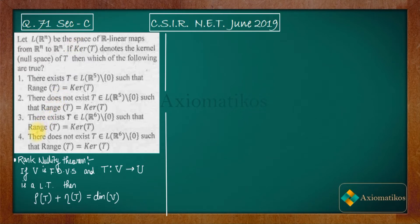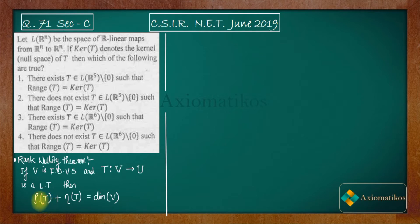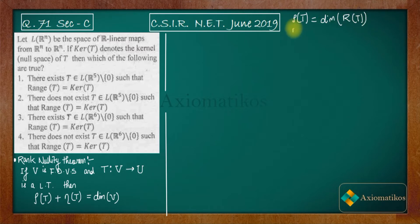Let me state the rank-nullity theorem. If V is a finite dimensional vector space and T is a transformation from V to V, then rank of T plus nullity of T equals the dimension of V. Rank of T is the dimension of the range space of T, and nullity of T is the dimension of the null space of T. Please keep this in mind.